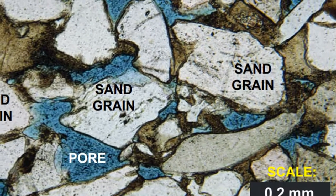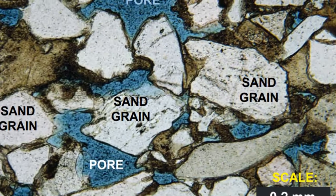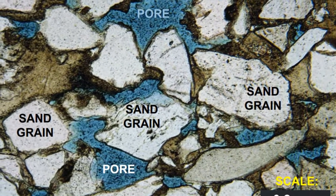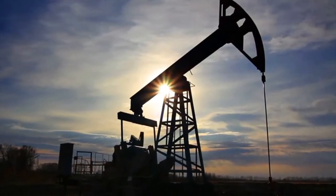Unless something blocks or traps this upward migration, the fluids will eventually reach the surface, at which point the volatile components will evaporate.